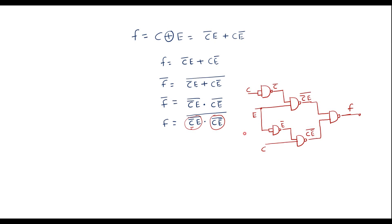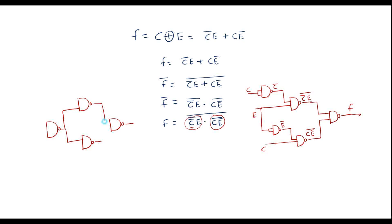There is also a standard circuit for an XOR gate using only four NAND gates. In this configuration, use four NAND gates: C and E are each fed into two gates, with cross-connections so that the output of each feeds into the next stage. The final output of this four-NAND-gate circuit is C XOR E. Both circuits implement the same function.